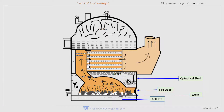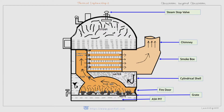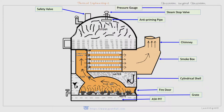The main cylindrical cell surrounds all the arrangement within the boiler. The smoke box receives smoke from the fire tubes and discharges it to the atmosphere through the chimney. The steam stop valve regulates the flow of steam from the boiler to the required place.